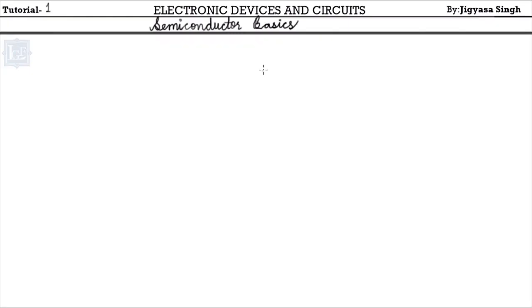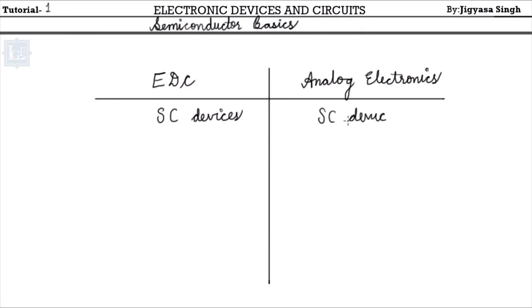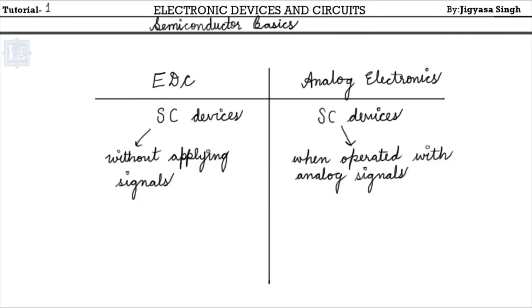Welcome to the first lecture of Electronic Devices and Circuits. Today we'll be studying semiconductor basics. Before starting, let's know the difference between EDC and analog electronics. Both deal with semiconductor devices, but EDC deals with semiconductor devices without applying a signal, while analog electronics deals with semiconductor devices when operated with analog signals.